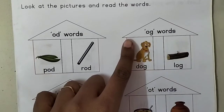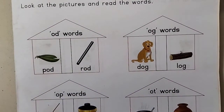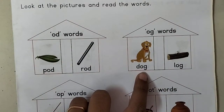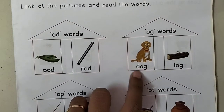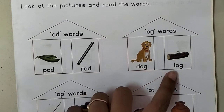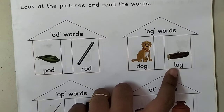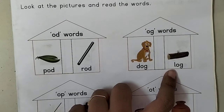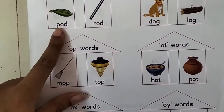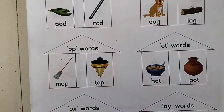Then OG words, जिसमें OG लगता हो। देखो इस picture में किसका picture है? D का साउंड है 'ड', और G का 'ग' — D, O, G — Dog। बीच में O ही आएगा। उसके बाद L, O, G — Log, यानी की लकड़ी। तो OD words और OG words — ये two letter words से हमने three letter words बना दिये।